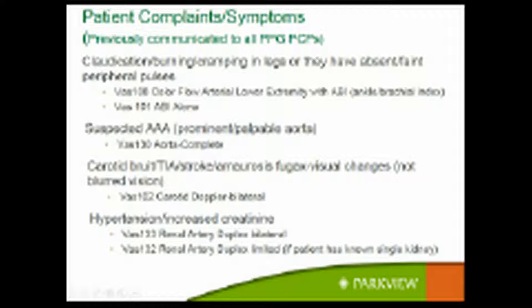For hypertension or increased creatinine, renal artery ultrasounds bilateral should be ordered. The only time unilateral should be ordered is if a patient has a known single kidney. We get orders from nephrologists who sometimes still order bilateral even for a single kidney patient — we have to change it. We will check the arteries to the kidneys.